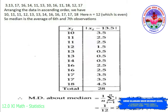Third question: find the mean deviation about median for the data. We arrange the data in ascending order: 10, 11, 11, 12, 13, 13, 14, 16, 16, 17, 17, 18. Number of observations is 12, which is even. So median is the average of the 6th and 7th observations. The 6th observation is 13 and the 7th is 14. So median m = (13 + 14)/2 = 27/2 = 13.5.